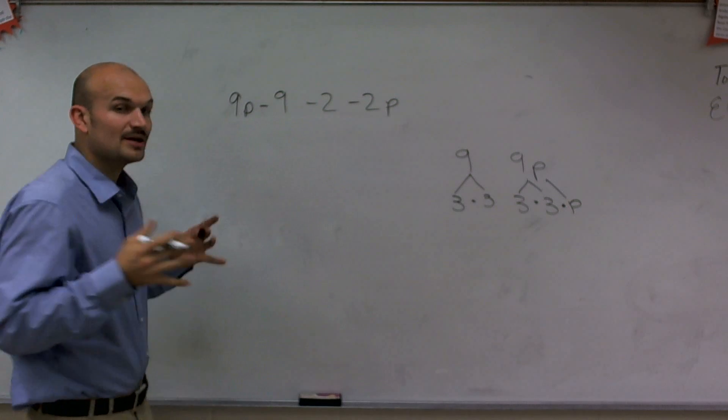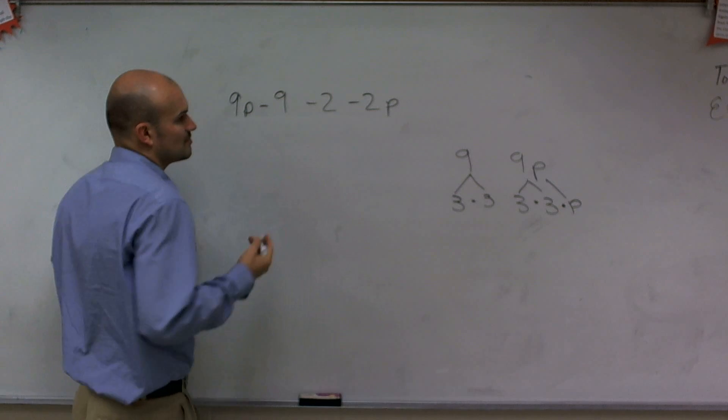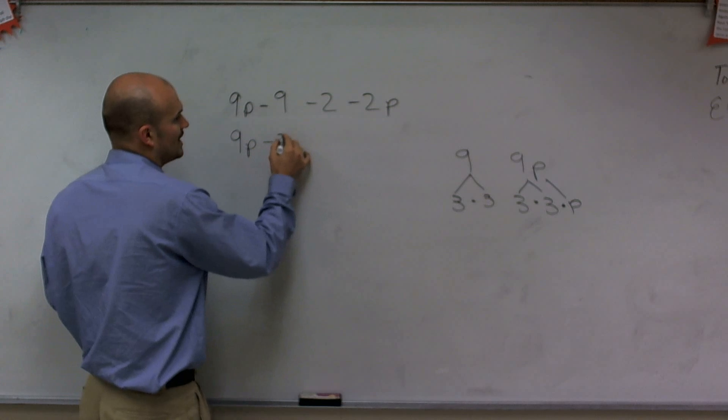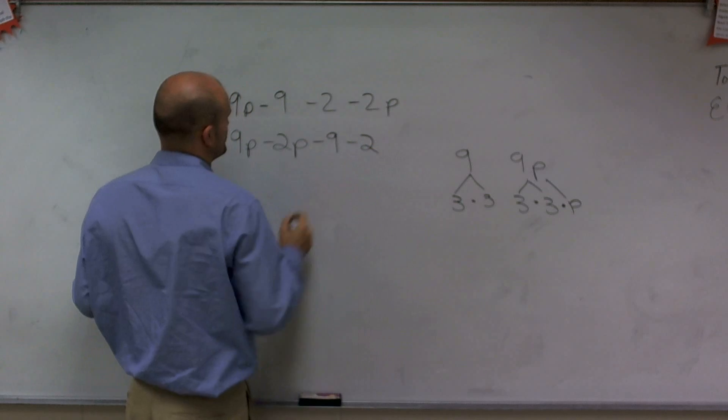So what I'm going to do is rearrange this problem so I have my like terms right next to each other. Because remember, we can work with the associative property to do that. So I can write 9p minus 2p minus 9 minus 2.